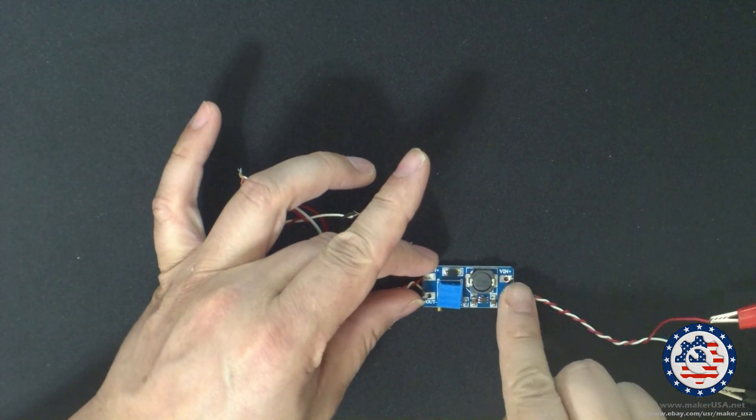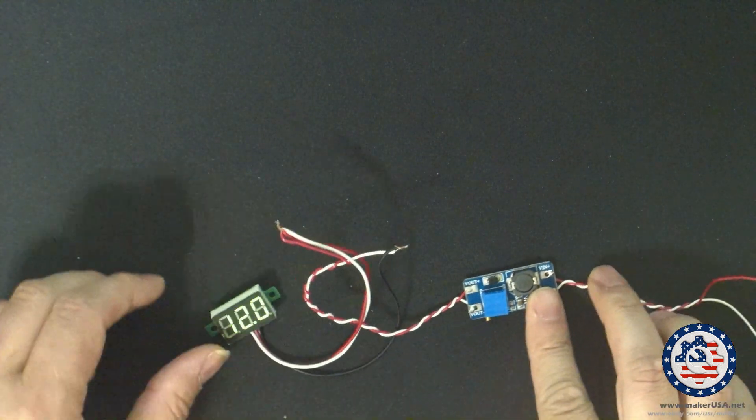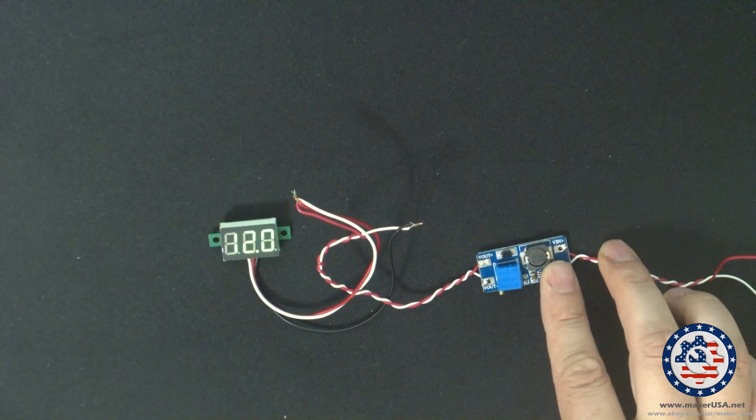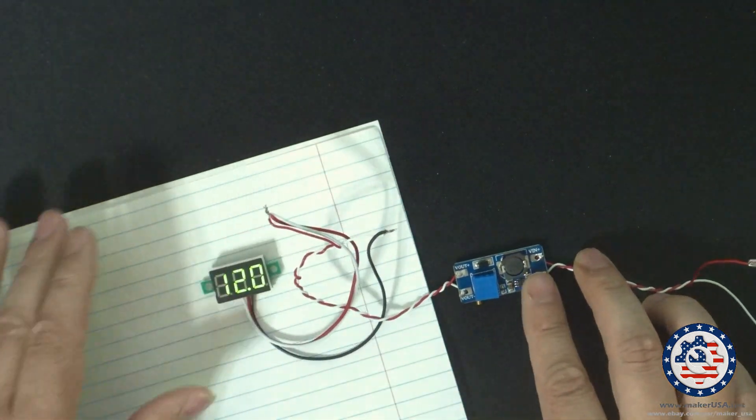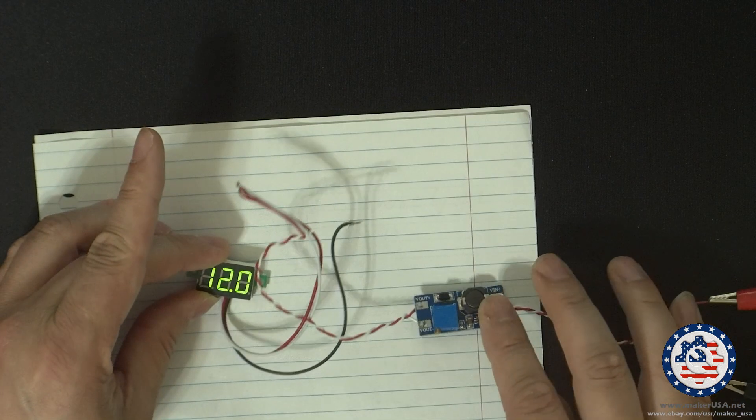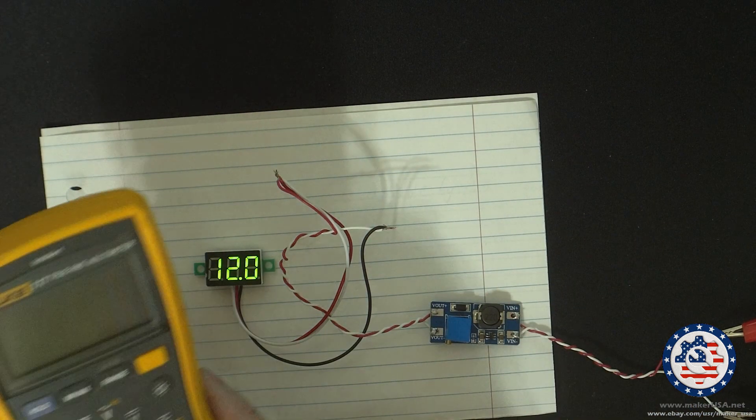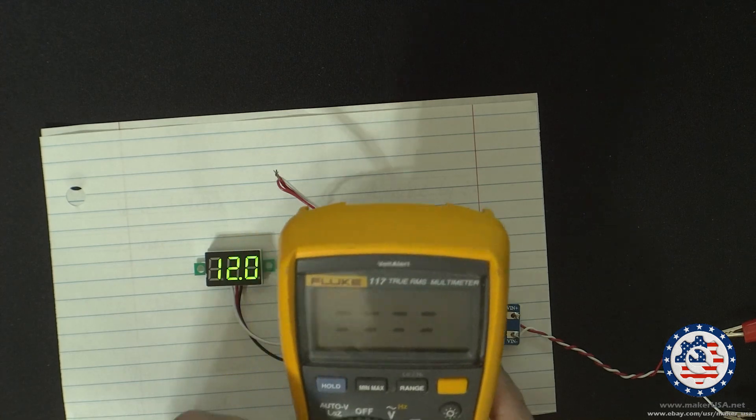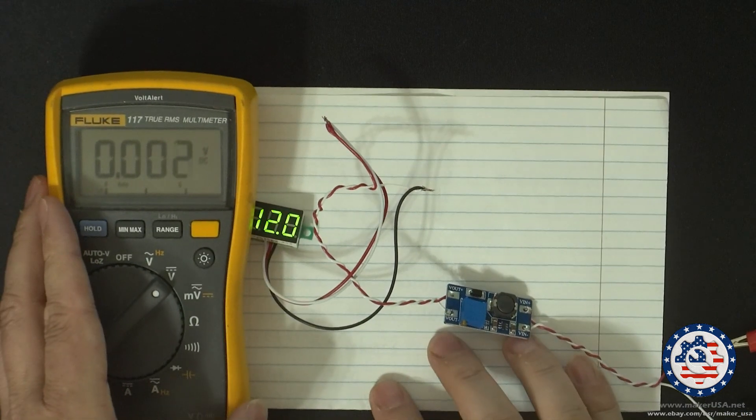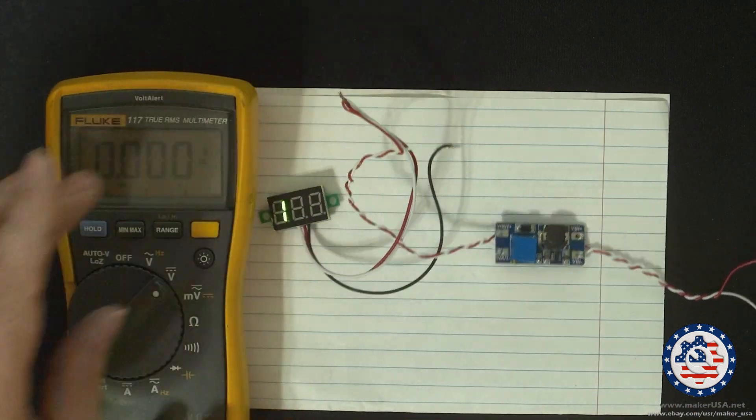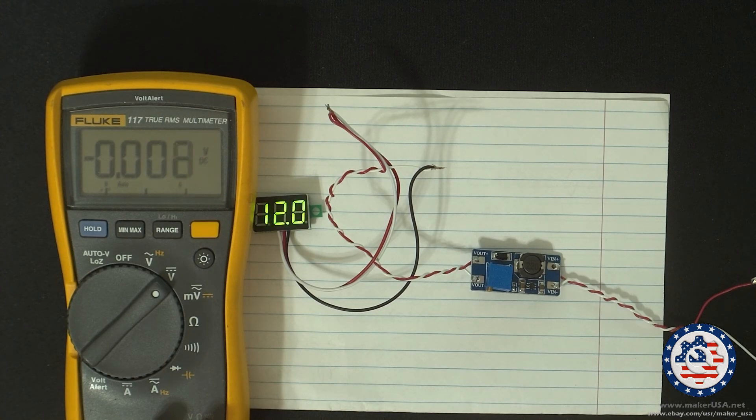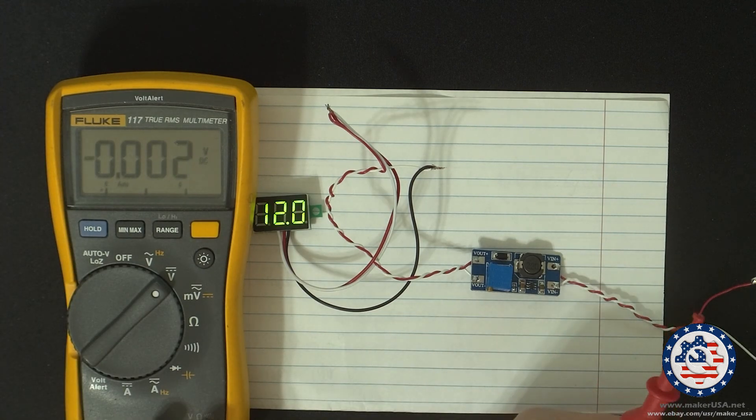So I had to solder these wires onto it and I have configured it to output 12 volts. Let me get a multimeter and set that up so that we can measure the input voltage at the same time.